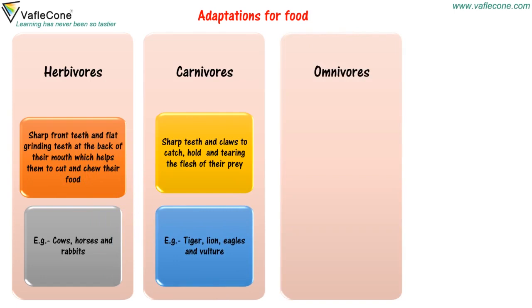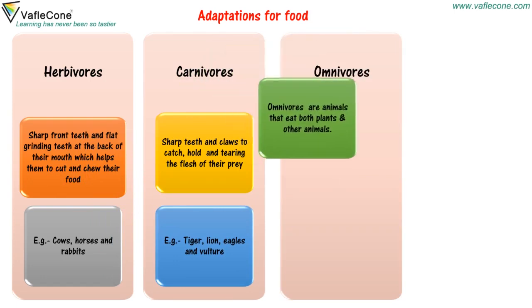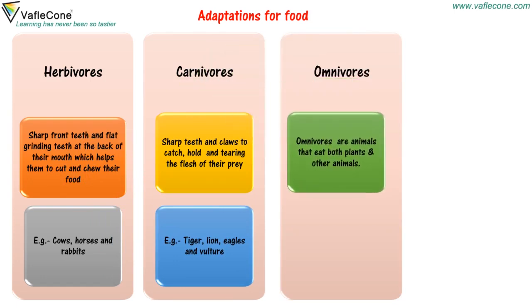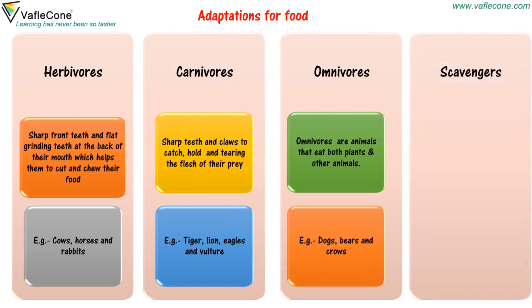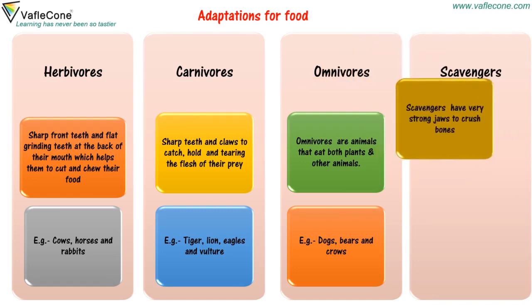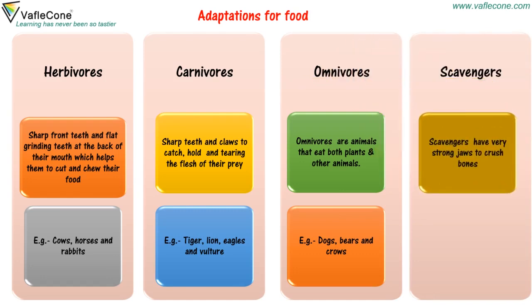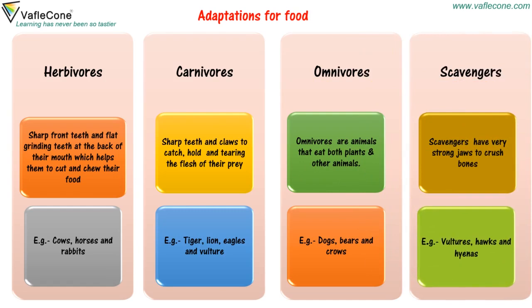Omnivores: Animals that eat both plants and other animals. For example, dogs, bears, and crows. Scavengers: Scavengers have very strong jaws to crush bones. For example, vultures, hawks, and hyenas.